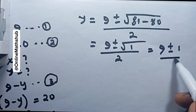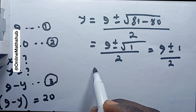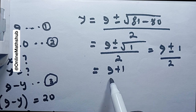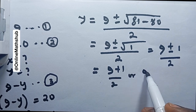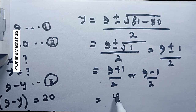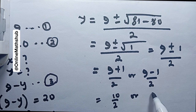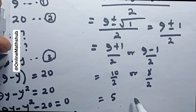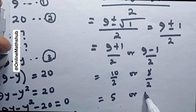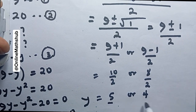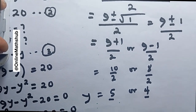So y equals 9 plus 1 divided by 2, or 9 minus 1 divided by 2. That gives us 10 divided by 2 or 8 divided by 2, which equals 5 or 4. So y is equal to 5 or 4.